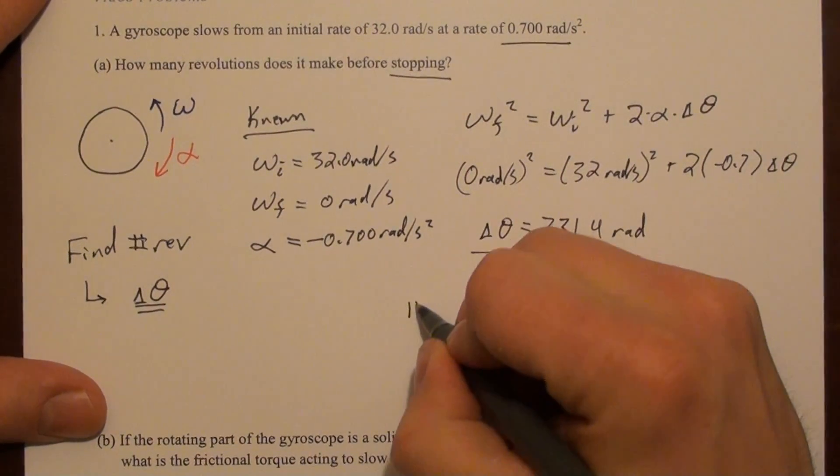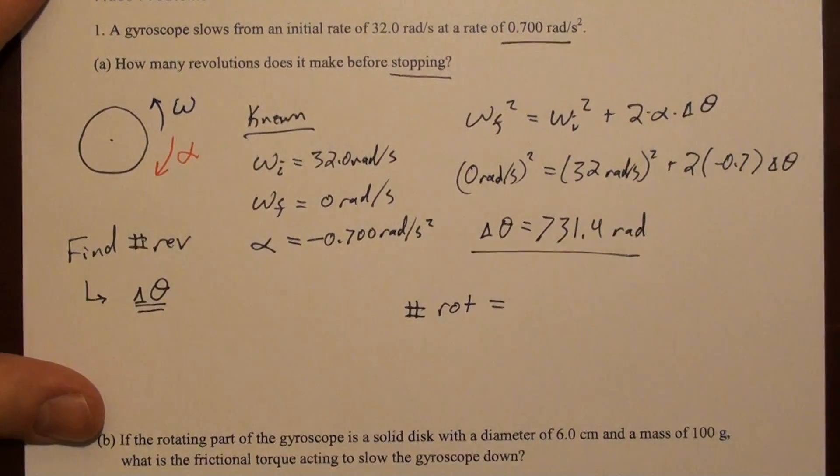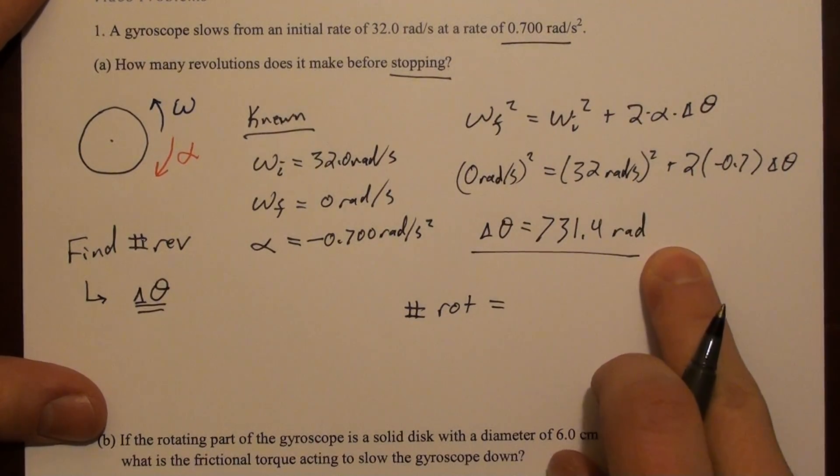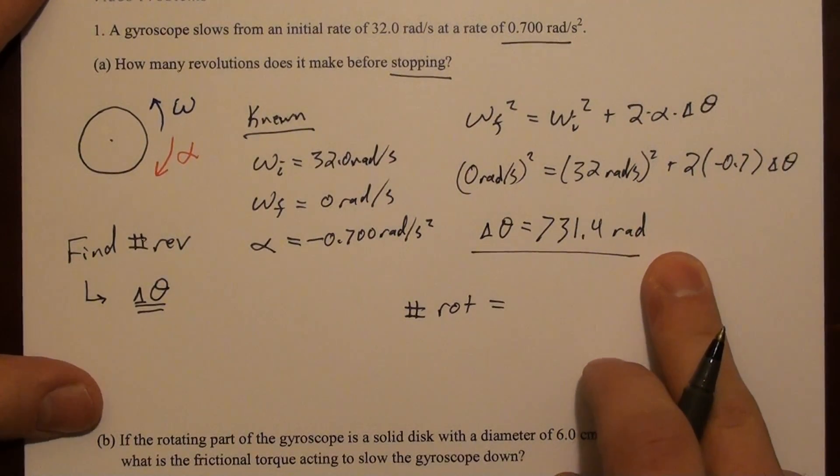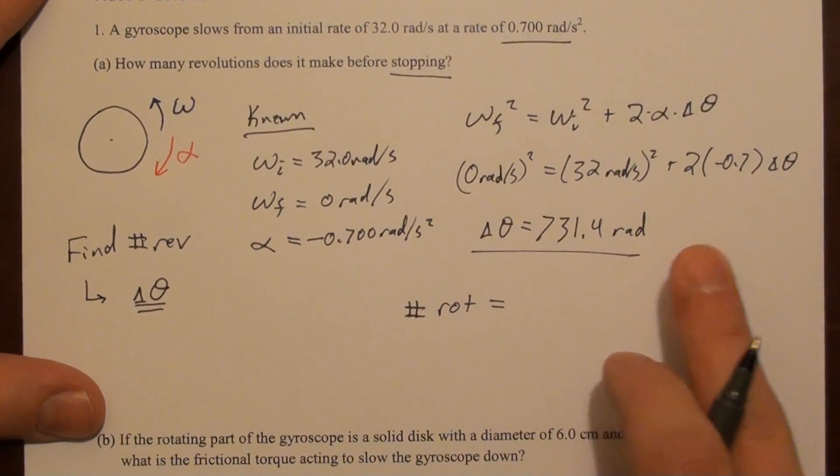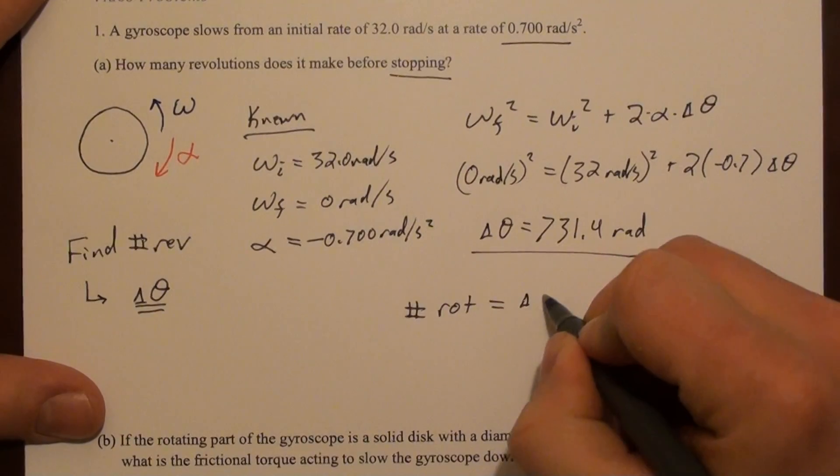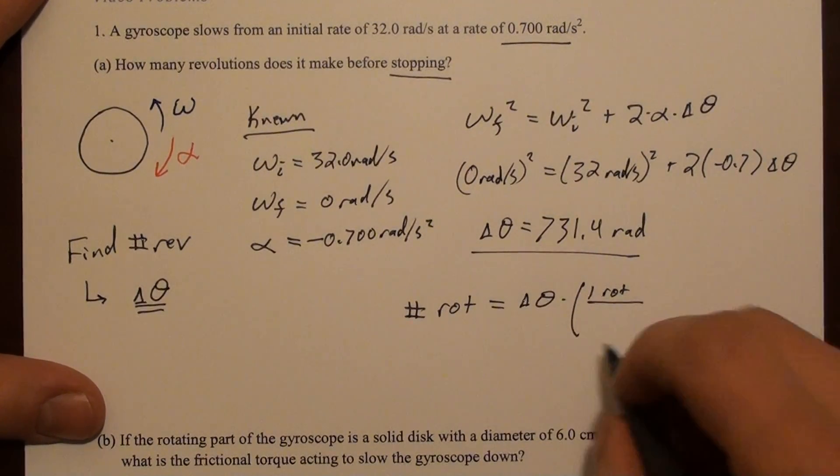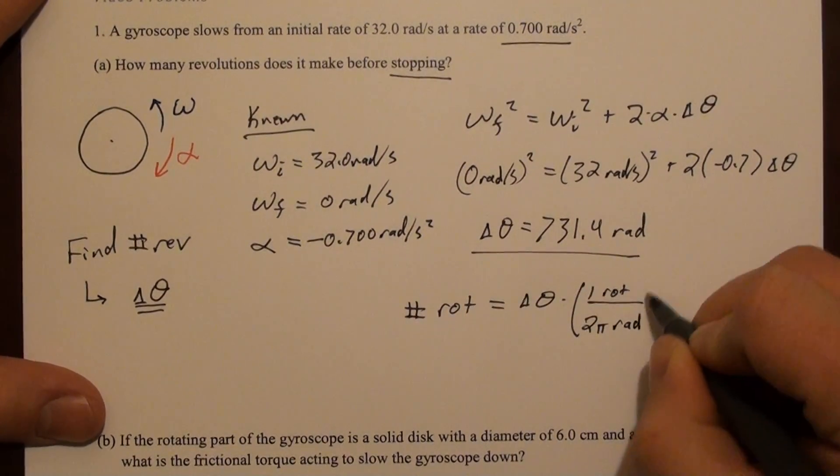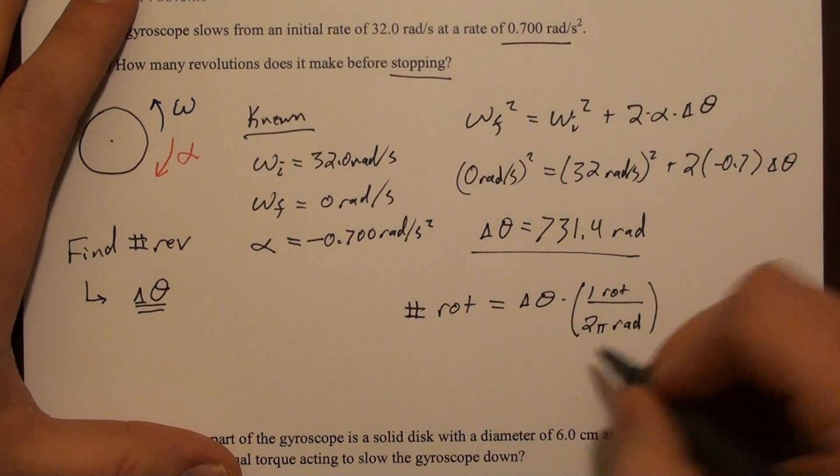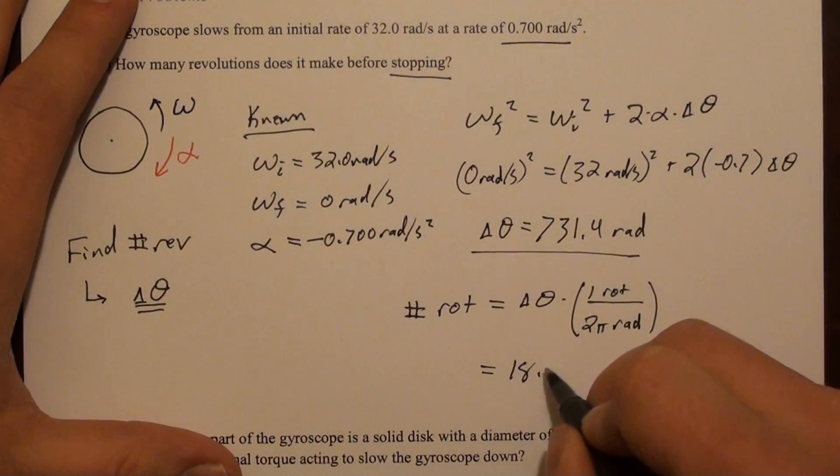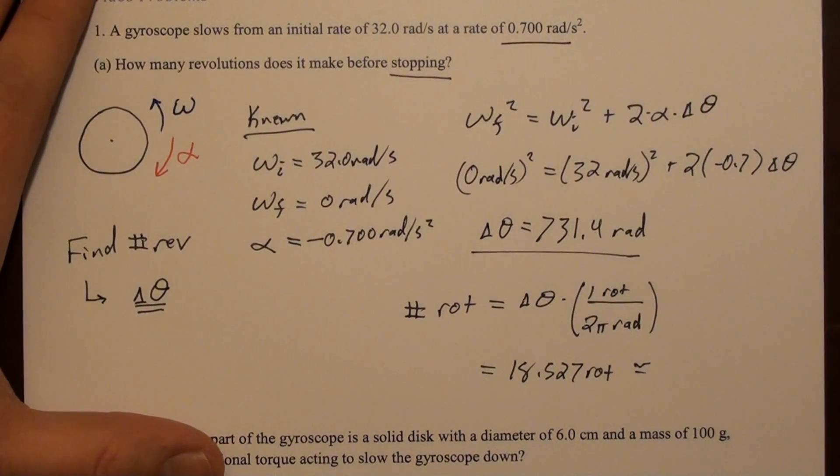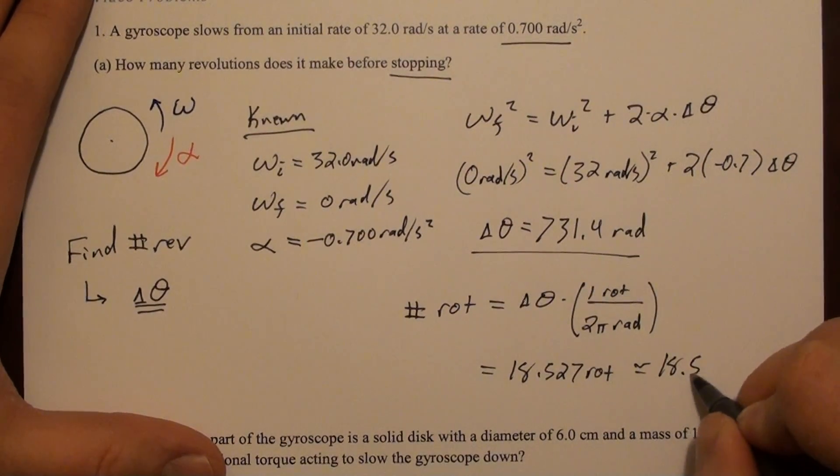If we're looking for a number of rotations, we're pretty much asking, can we convert an angle traveled in radians to a number of rotations? So, we just need to ask, how many radians are in a full rotation? And the answer is 2 pi. Alright? So, we take delta theta, and we multiply by, what pretty much boils down to a conversion factor. One rotation is 2 pi radians. And if you do that, what you get is 18.527 rotations. Or, rounding to 3 significant figures, 18.5 rotations.